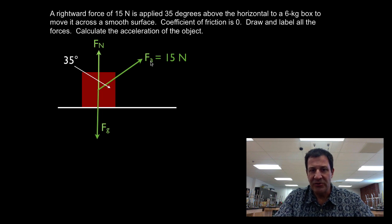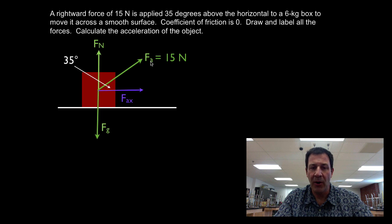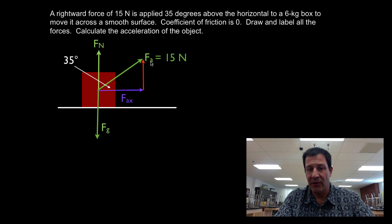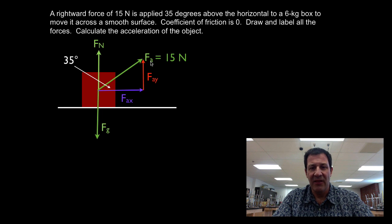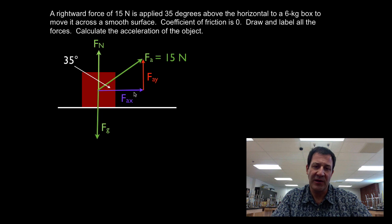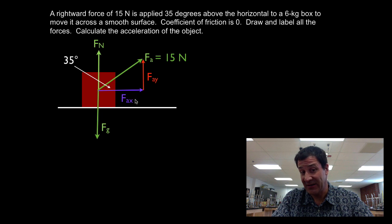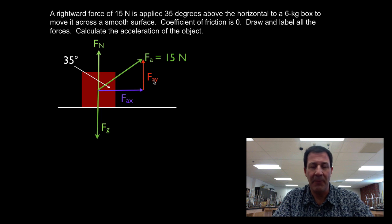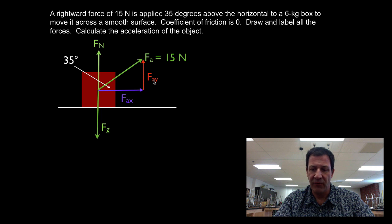We're going to decompose the applied force into the x component — the part of the applied force that acts in the x direction — and the y component, the part acting in the y direction. Because this box is moving across the surface, we need to know the force in the x direction. Also, since we're pulling up at an angle, we'll use FAY to figure out the normal force.